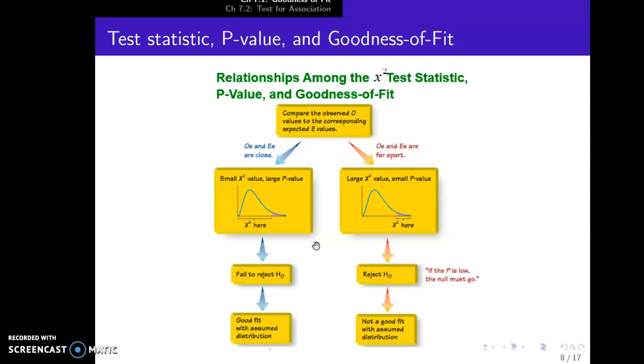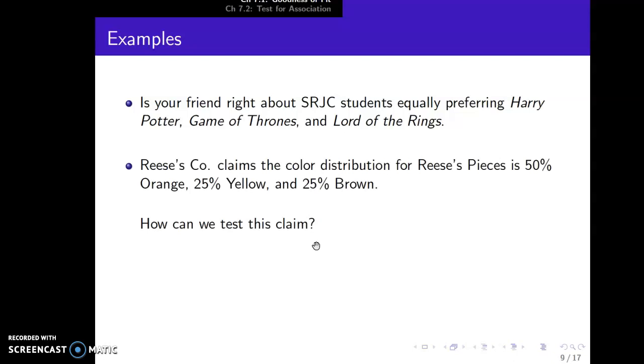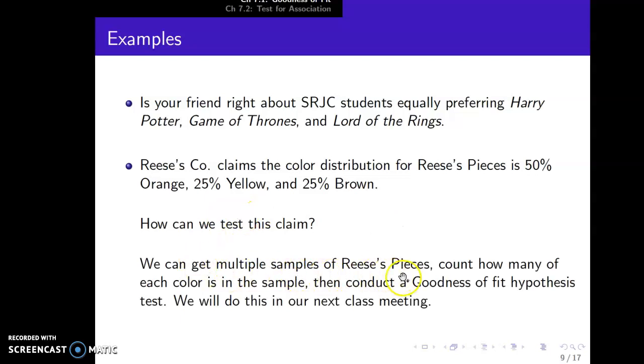Alright, so I want to go through that one example in detail for chi-squared goodness of fit. As another example we could do: Reese's claims that the color distribution for Reese's Pieces is 50% orange, 25% yellow, and 25% brown. So how can we test this claim? Well, next class we can get multiple samples of Reese's Pieces, count how many of each color is in the sample, and then conduct a goodness of fit hypothesis test. So I'm going to bring in a bunch of Reese's Pieces in the next class, and we'll go through and actually do a whole bunch of hypothesis tests to see if Reese's Pieces' claim is correct.